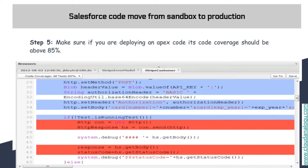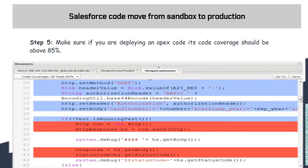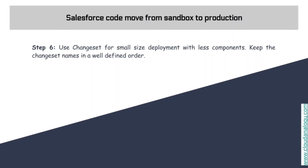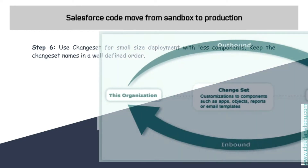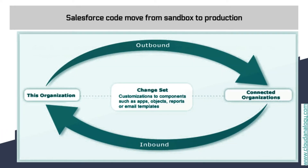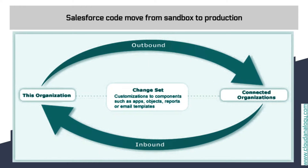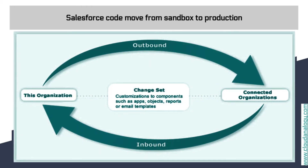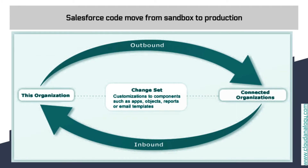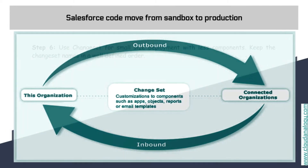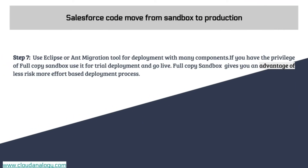Another step is to use changesets for small-size deployments with fewer components, and to keep the changeset names in a well-defined order. I have seen several developers make the mistake of not naming or adding a description to their changesets — that's bad practice. We should always put a well-defined name including the month detail and the feature being pushed to production.